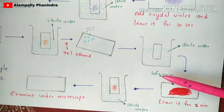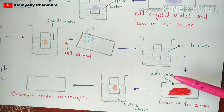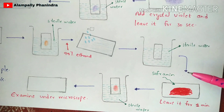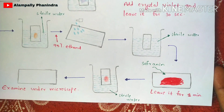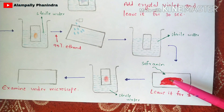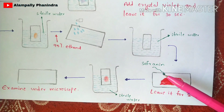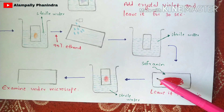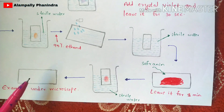On the cleaned slide, add safranin — note that the bacterial colony is still present and will not be removed. After adding safranin, leave it for one minute. After one minute, take a water bath with sterile water, dip the slide containing the bacterial colony treated with safranin, wash the slide again, then remove it. The slide is now ready to be examined under a microscope.